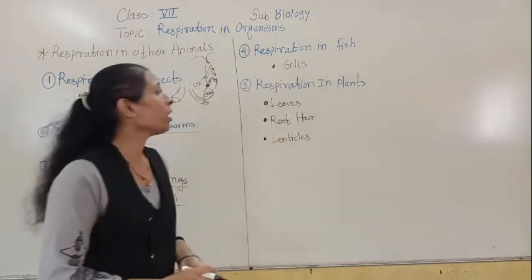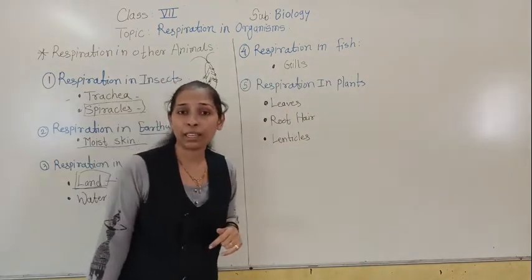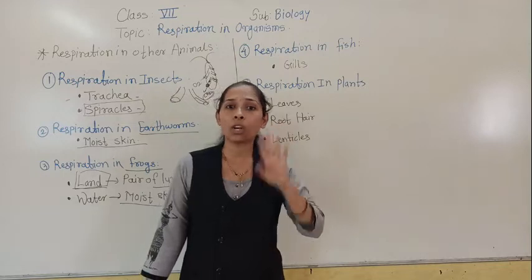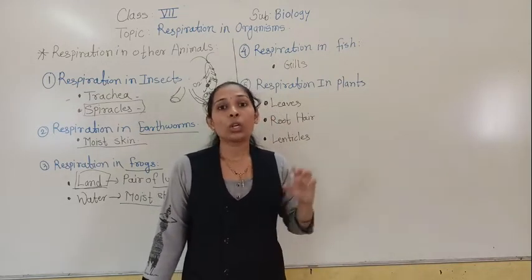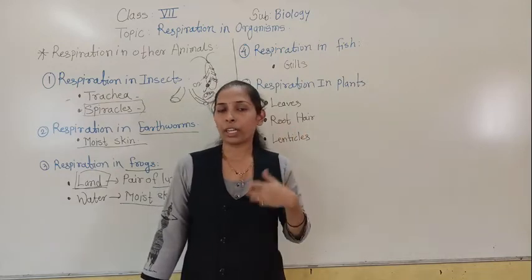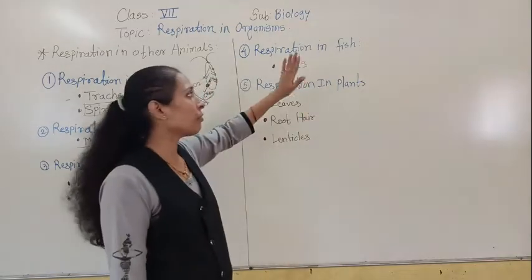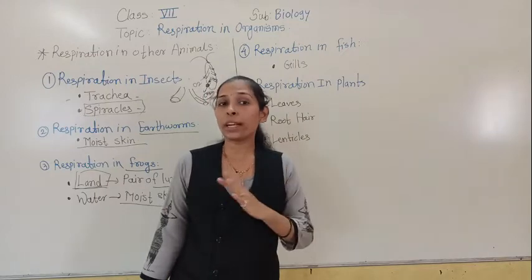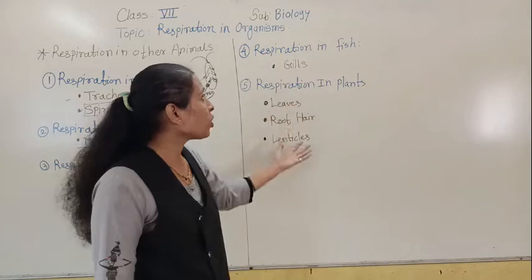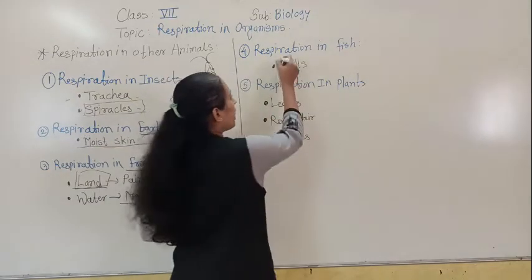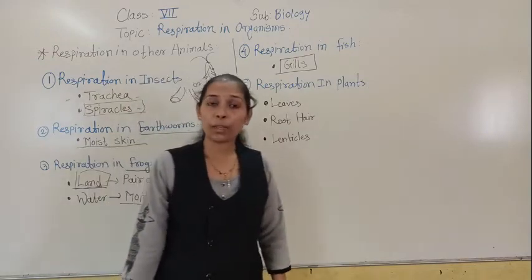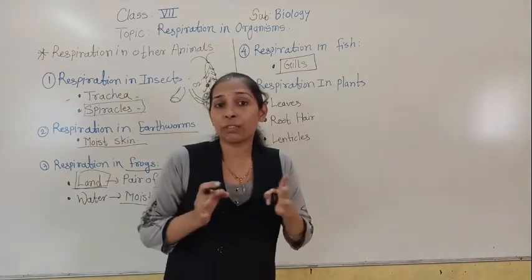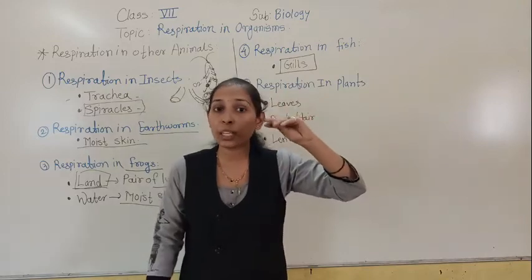Now we will see respiration in fish. The fish lives in water, and oxygen also gets dissolved in water. That dissolved oxygen is utilized by the fish for its respiration process. For that, fish have a very special respiratory organ — gills. If you have observed fish in a fish tank, you can see that the fish is continuously moving its mouth. The reason is that through its mouth it is taking in water, and along with that water it is also taking in oxygen.